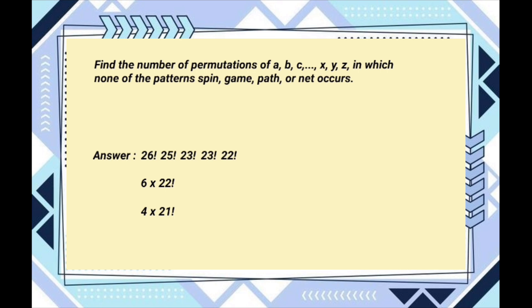Finally, to count the number of permutations that contain all four forbidden patterns, we treat the four patterns as a single block and permute the remaining letters. This gives us 22 factorial.